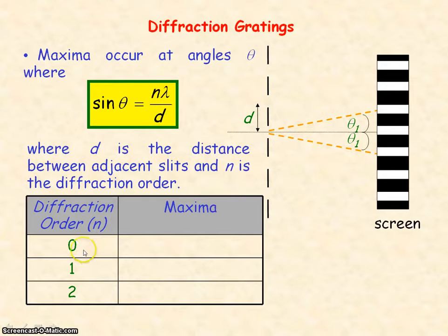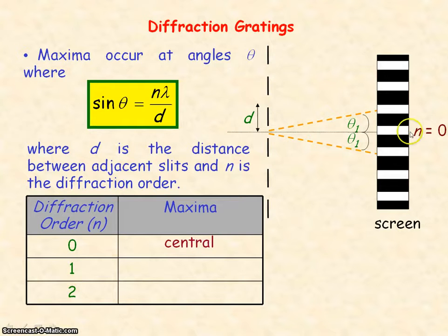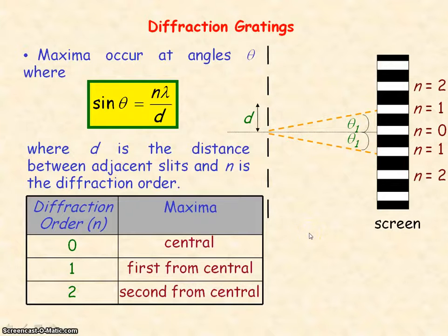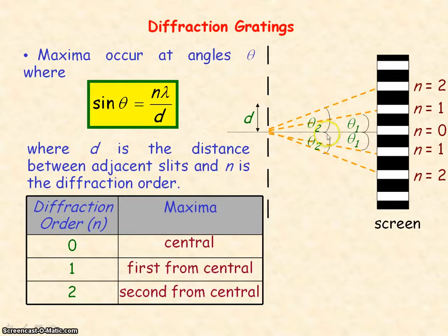When n equals 0, that represents the central maximum. When n equals 1, it's the first maximum from the centre, so theta would be theta 1. And when n equals 2, it would be the second maximum from the centre, so the second order maximum makes an angle of theta 2 relative to the centre.